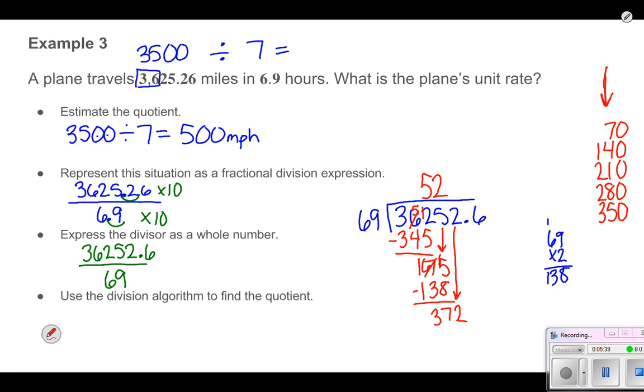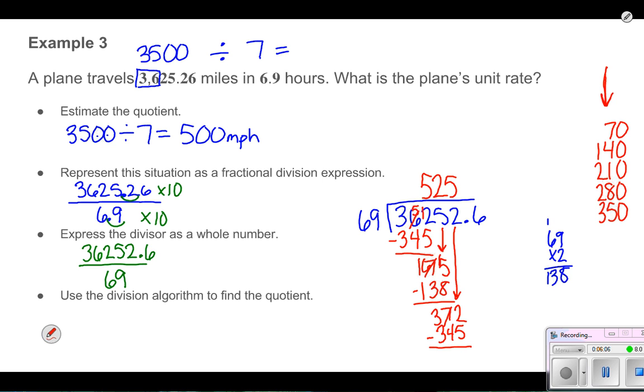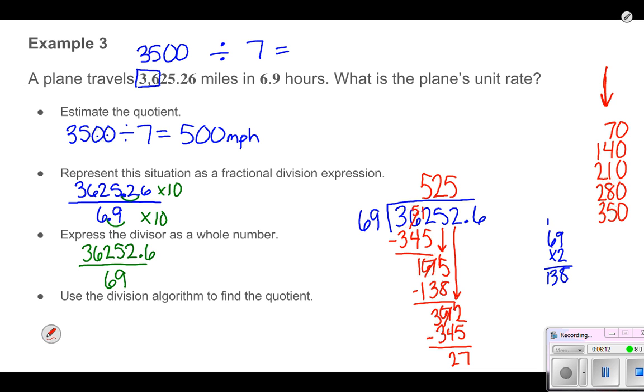I can bring down my next number and I'm at 372. I'm going through the division process of finding out how many sets I can get. I know that when I divided by 5, I got 345, so that's pretty close. I'm going to go ahead and give that one a shot again. So 5 sets was 345. Subtracting, 12 minus 5 is 7, 6 minus 4 is 2. 27 is less than 69, so I'm on the right track.